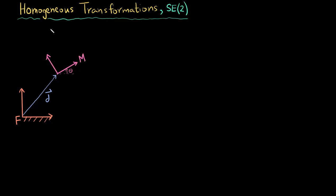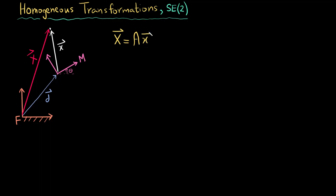I have drawn a fixed frame and a moving frame. The moving frame is displaced by a vector d and rotated by an angle theta, and there is a point which is expressed in the moving frame as small x. The same point when represented in the fixed frame is the big x, marked in red.